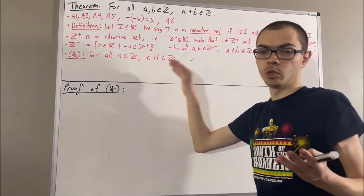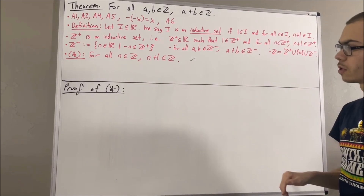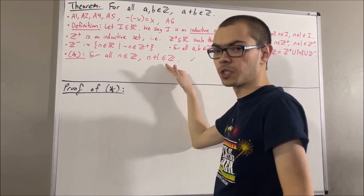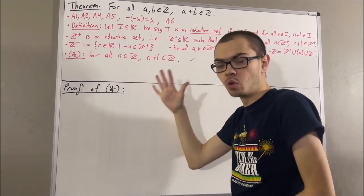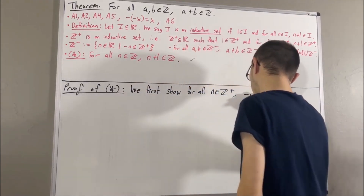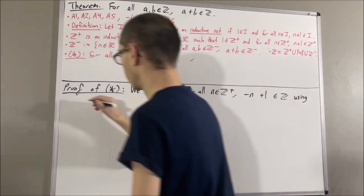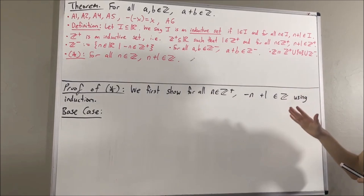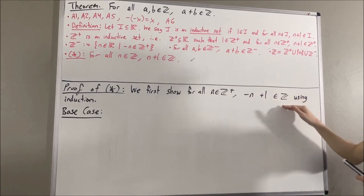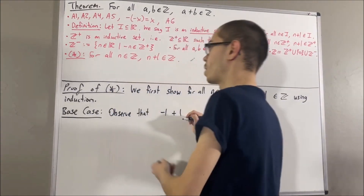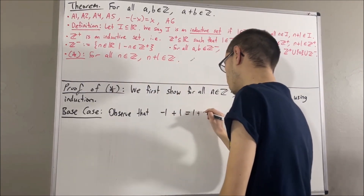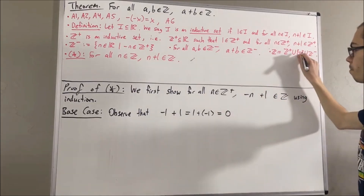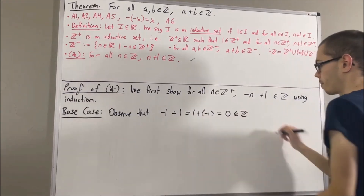If n is equal to 0, then n plus 1 is equal to 1, and 1 is a positive integer, therefore 1 is an integer. The case that's more important to discuss is if n is a negative integer. To prove this, we're actually going to prove for all positive integers n, negative n plus 1 is an integer, and we're going to prove this using induction. In the base case, we're trying to prove this is true when n equals 1 — that is, negative 1 plus 1 is an integer. By the commutative law, negative 1 plus 1 is just 1 plus negative 1. By axiom 5, any real number plus its negative is 0, and 0 is an integer. So negative 1 plus 1 is an integer. This completes the base case.